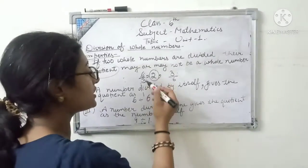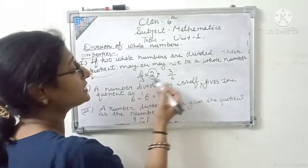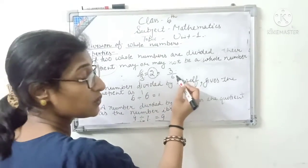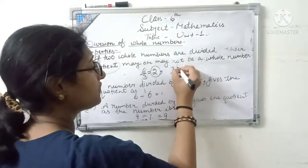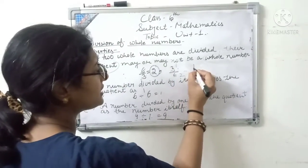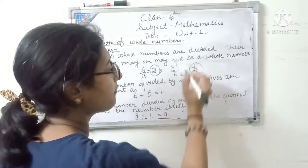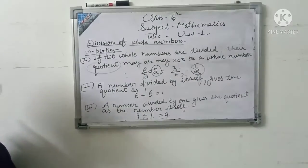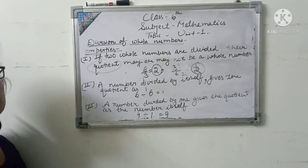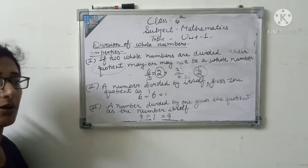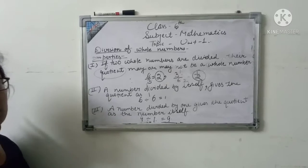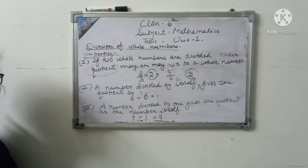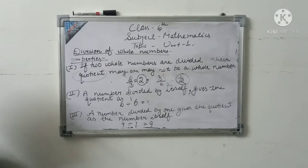But in the opposite case, if I divide 3 by 6, then I will get 3 ones are 3, 3 twos are 6, giving me 1/2. And you know very well that 1/2 is not a whole number. So when we divide two whole numbers, their division may or may not be a whole number. Clear?